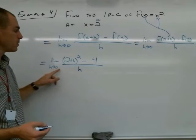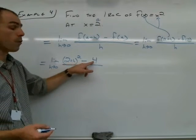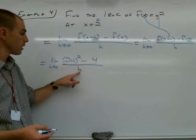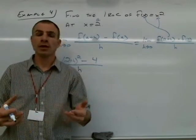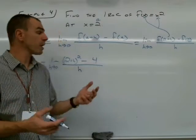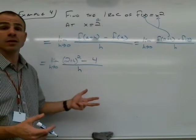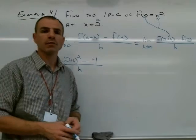Again, if we plug in 0 for h, we have 2 squared minus 4 in the numerator, which is 0. We have 0 in the denominator, so that's that 0 over 0 that we're looking to get rid of. We want to work around this. We want to simplify this so that we no longer get that 0 over 0.